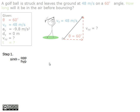Since we want to find the vertical velocity, which is the opposite, as seen in the diagram, we will use the equation sine theta equals opposite over hypotenuse.